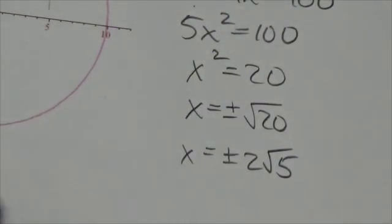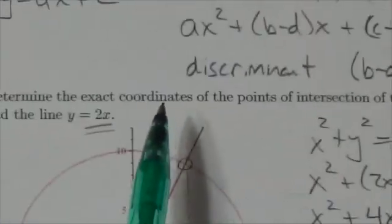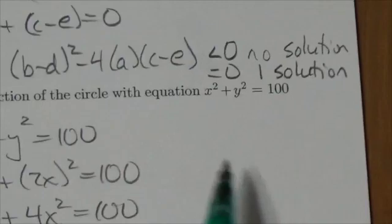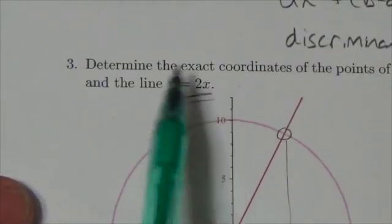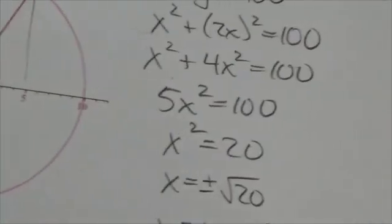To find the y-coordinate, I'm going to either use the equation of the circle or the equation of the line. Now, I mean, look at that. Squared, squared, 2x. Well, I love that. So let's do that. So y equals 2x.